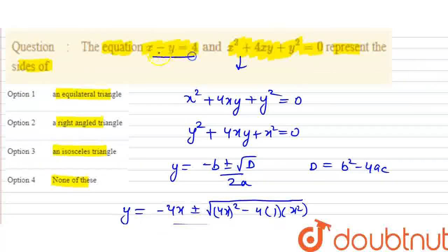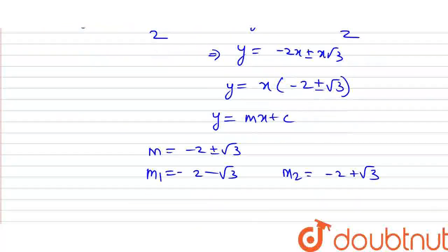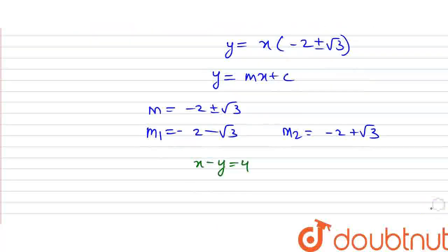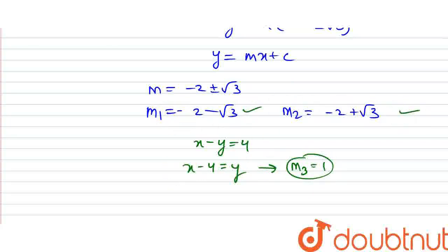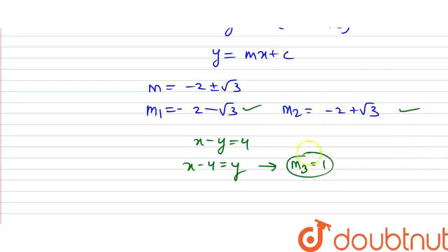Now the other equation is x minus y equals 4, which can be written as y equals x minus 4. So the slope of this line is m3 equals 1, since the coefficient of x is 1. So now we have three slopes: m1, m2, and m3 equals 1.